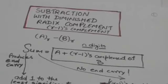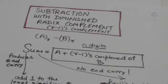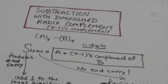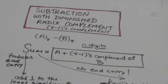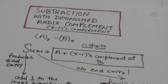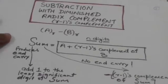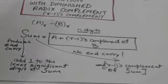Hello friends, welcome back to the tutorials. In this tutorial we will learn how we can perform subtraction with diminished radix complement, that is by using (r-1)'s complement. Suppose there are two numbers A and B of n digits and their base is r, and we have to subtract B from A.